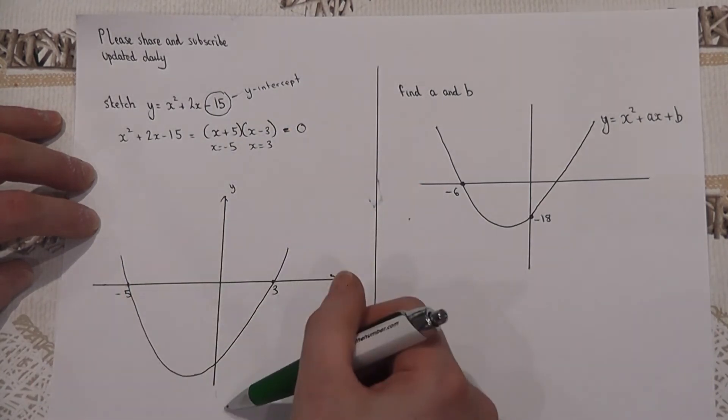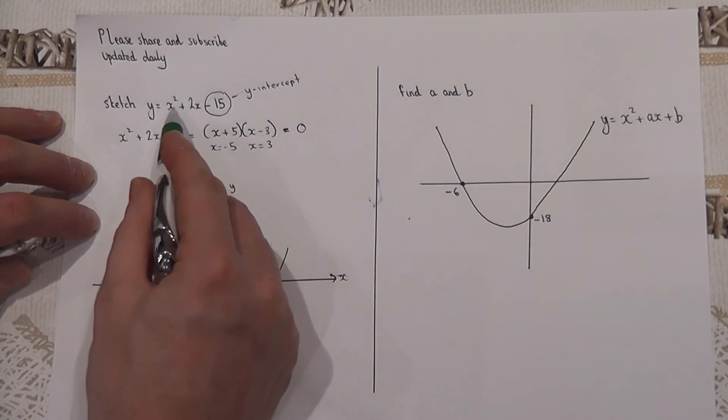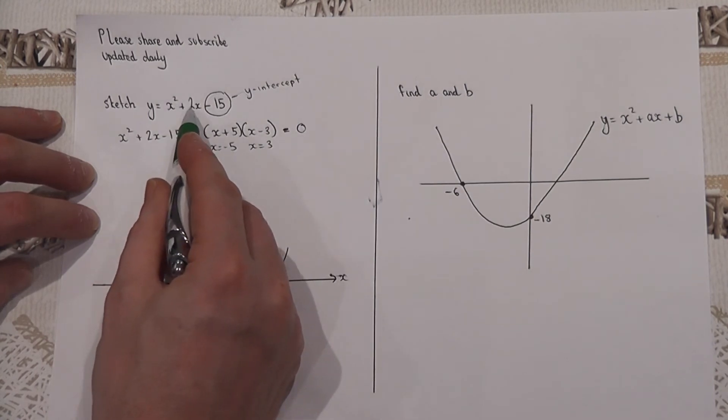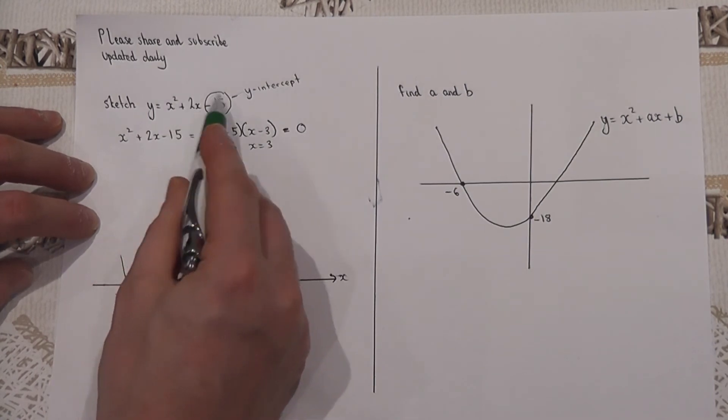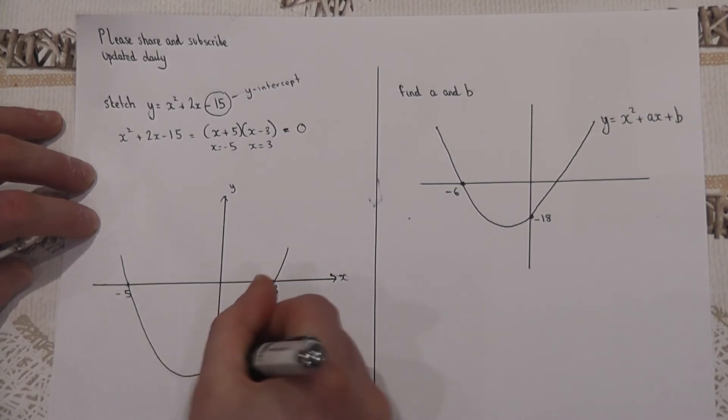And zero squared is zero, two times zero is zero, take away 15 is minus 15. And that therefore is the y-intercept.